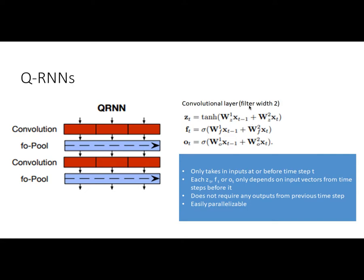With a filter width of two, you multiply the inputs from the previous time period and the current time period by different weight matrices and pass them into the functions. Because you're doing it this way, you can run all of these in parallel — you don't have to wait for the previous time step to complete before running the next.